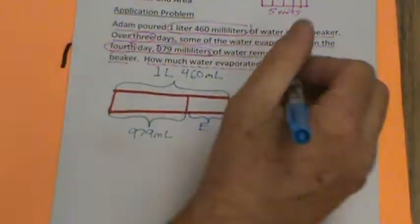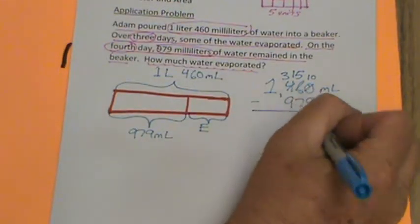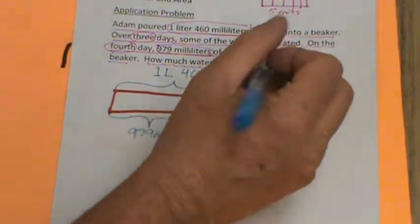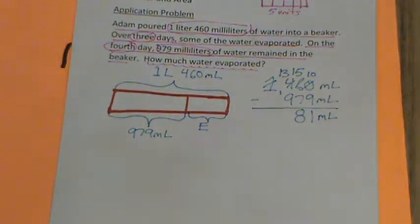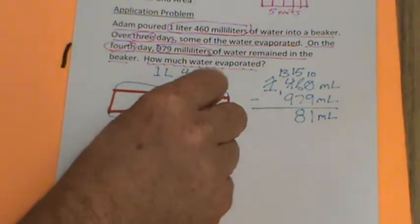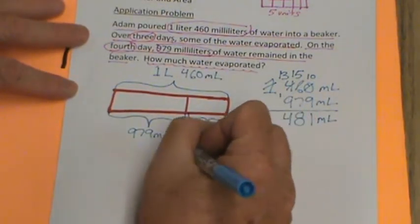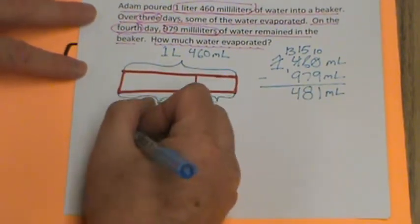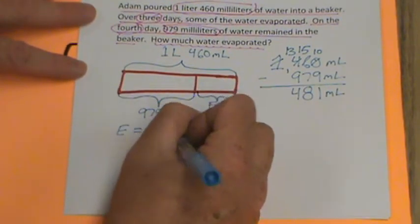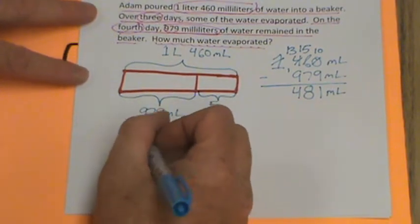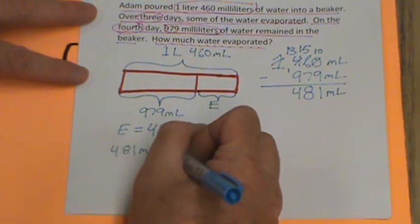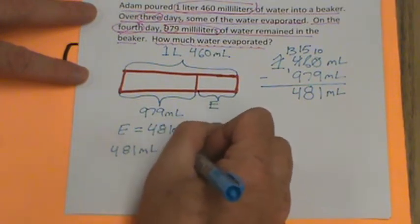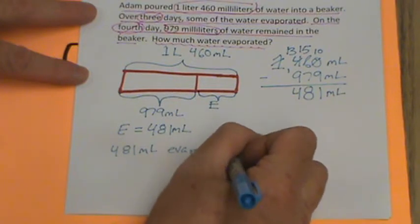5 plus 3 is 8. I can't take 9 hundreds away from 3 hundreds, so I'm going to decompose the thousands. Make that 13 hundreds. 13 hundreds minus 9 hundreds. Can't figure that out in your head. Just go 9, 10, 11, 12, 13, 4. So it looks like E, and we'll come down here to do this, E equals 481 milliliters. And we could just say 481 milliliters evaporated. Period.